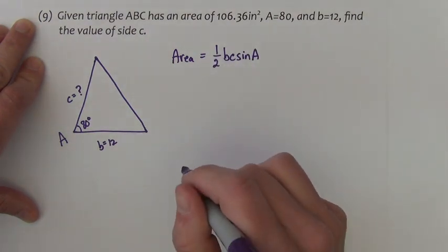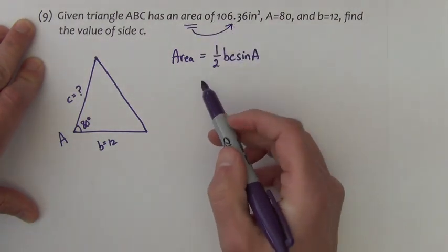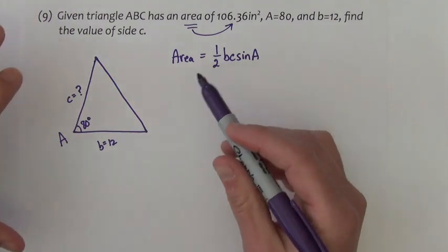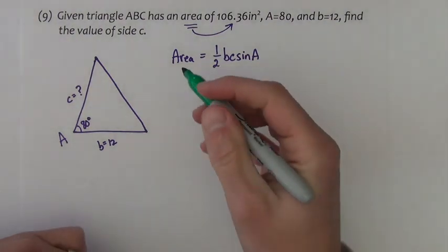In this particular problem, it's kind of presented a little bit differently in that we know the area already for us to find one of these two sides. So we can still do this, we can still apply this formula to do this problem.